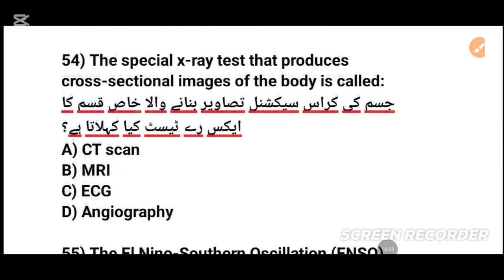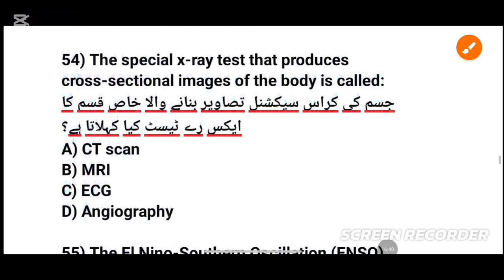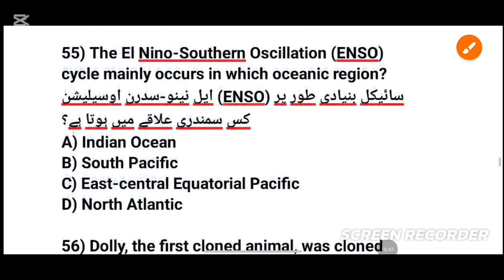MCQs number 54: A special X-ray test that produces cross-sectional images of the body is called dash. یہ کراس سیکشنل تصویر بنانے والا خاص X-ray ٹیسٹ کیا کہلاتا ہے؟ The answer is CT scan.